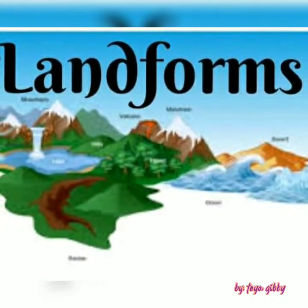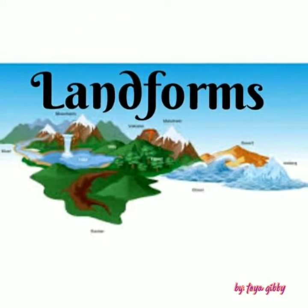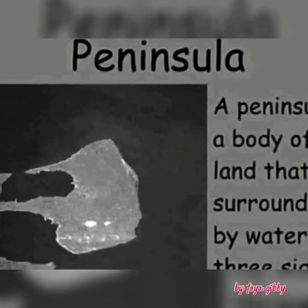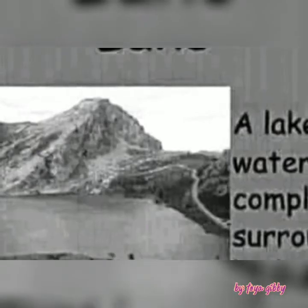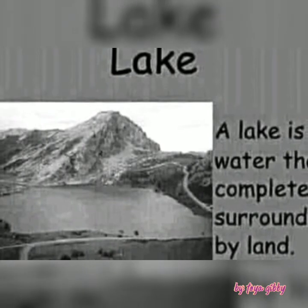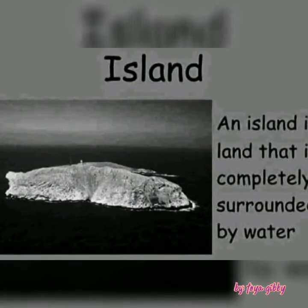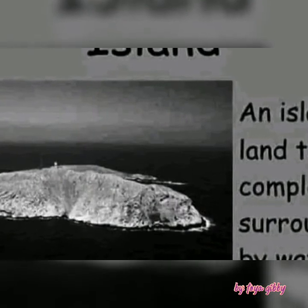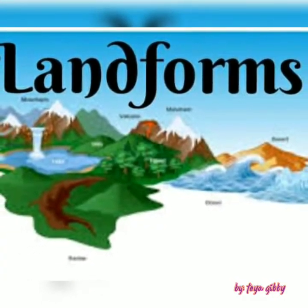Boys and girls, we also have other types of landforms. The first is peninsula — a peninsula is a body of land that is surrounded by water on three sides. As you can see in the picture, the land is not completely surrounded by water, and that is why it's called a peninsula. The second landform is lake — a lake is water that is completely surrounded by land. The other landform is island, which is the opposite of a lake: it's a piece of land that is completely surrounded by water.